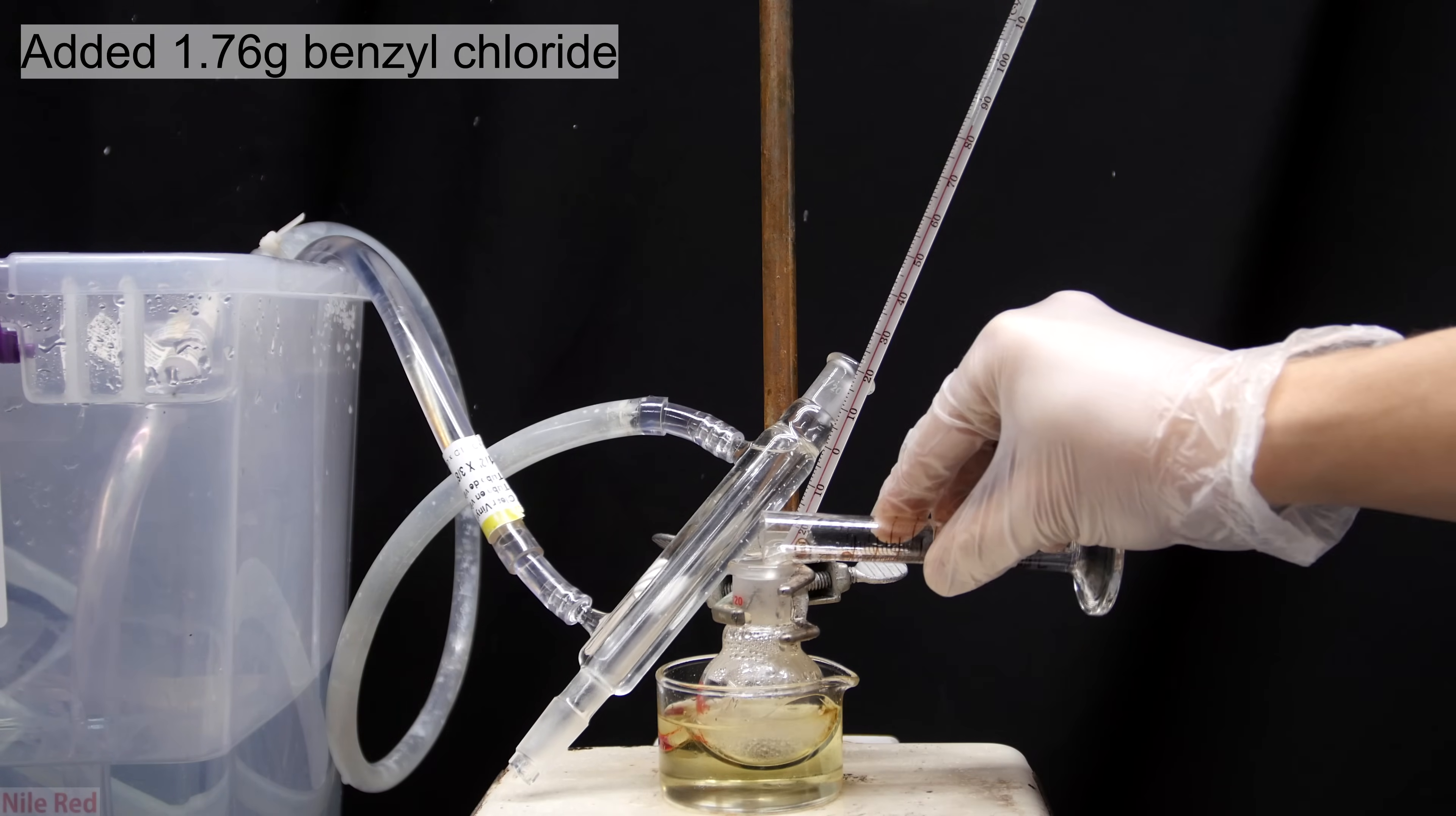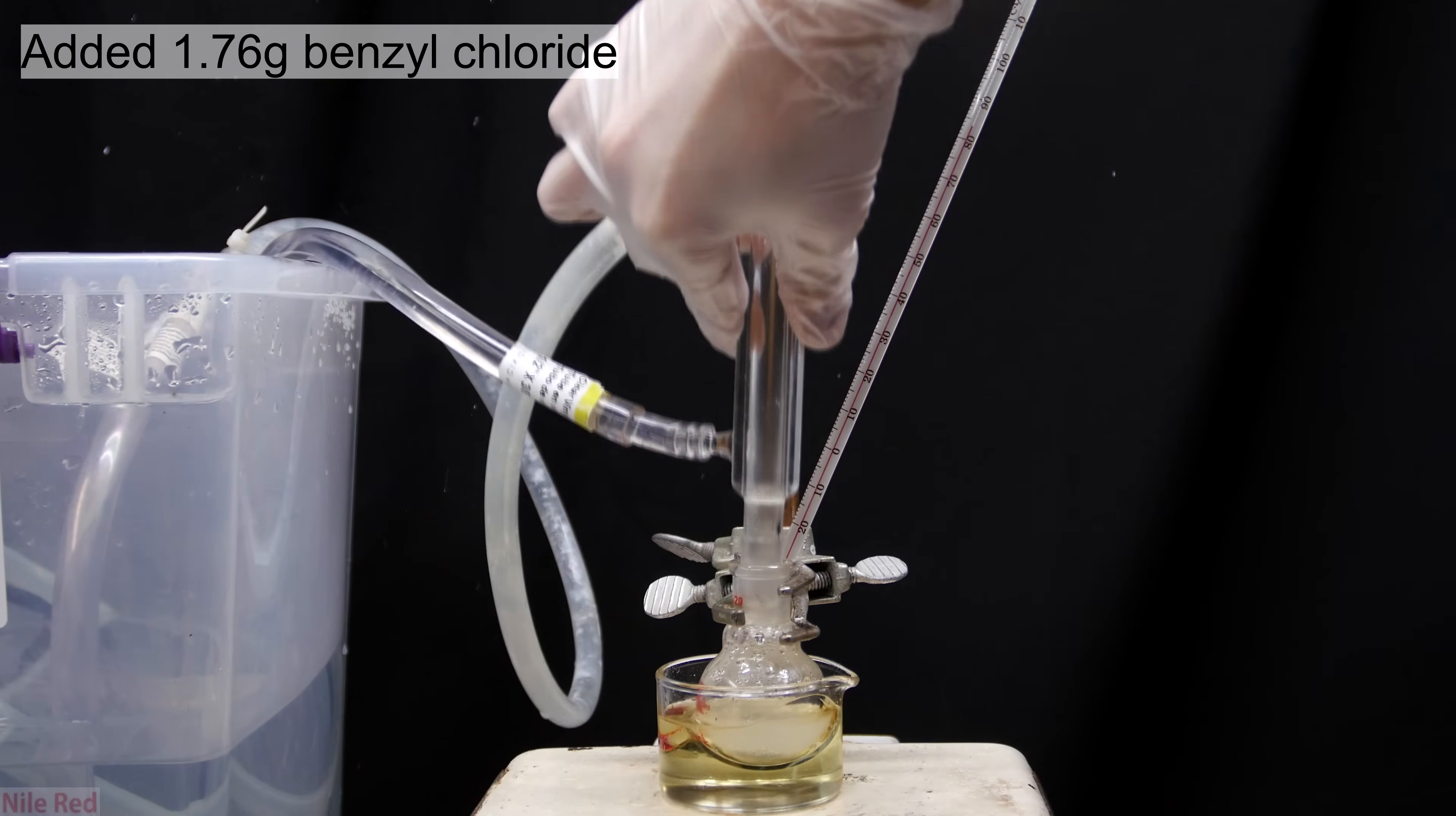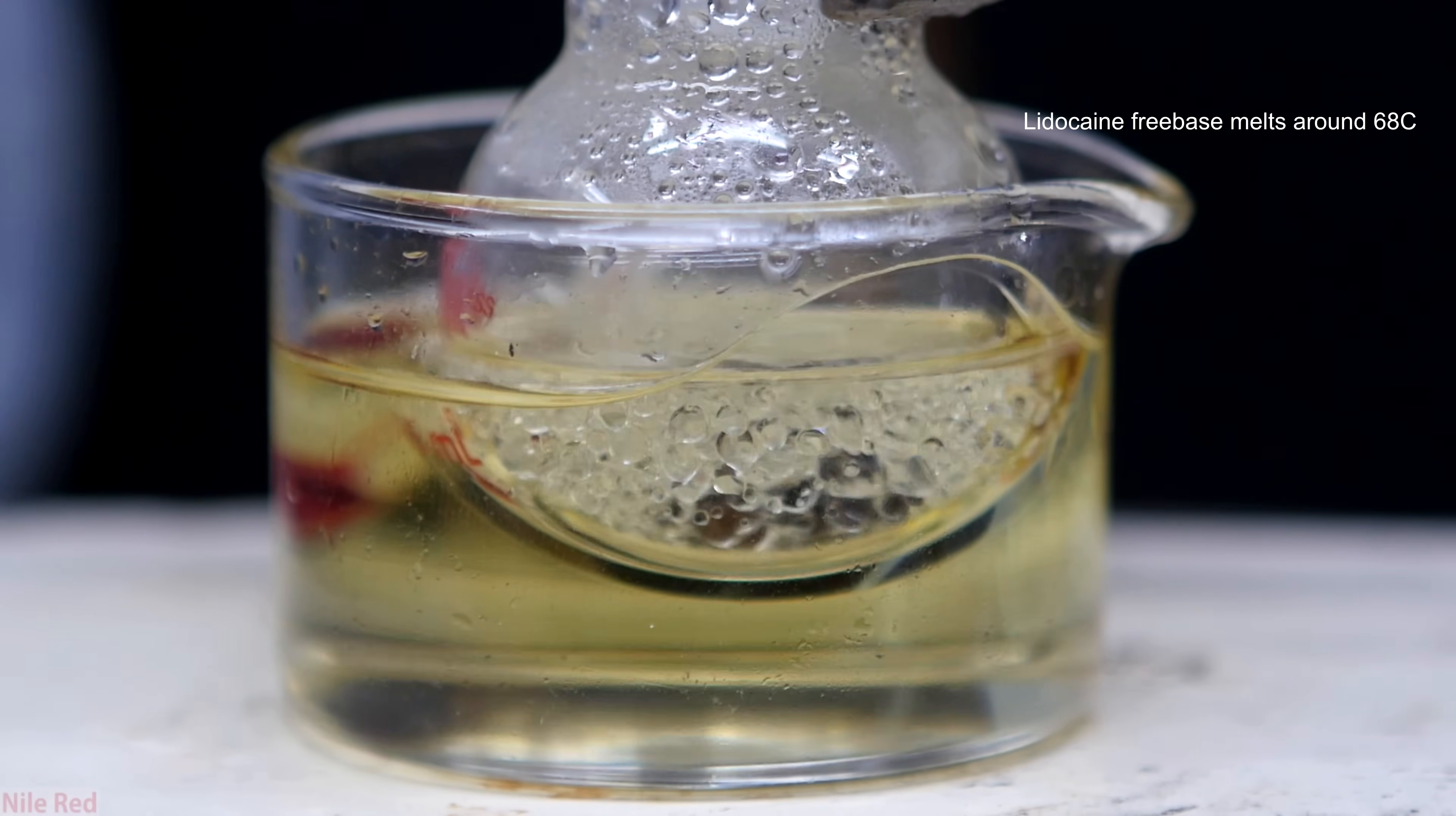Once we're around 80°C, the condenser is taken off and I add 1.76 grams of benzyl chloride. Once the benzyl chloride has been added, the condenser column is replaced back on top of the flask. If we take a closer look at the reaction, it actually kind of looks pretty cool. These little small globs of liquid are actually melted lidocaine. As the lidocaine reacts with the benzyl chloride, the globs should slowly disappear.